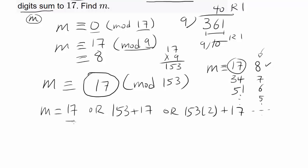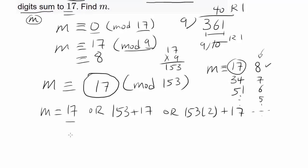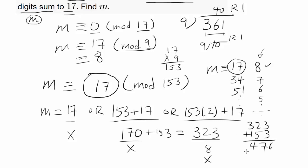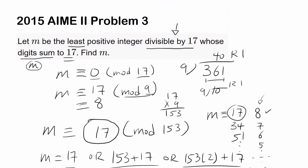So let's evaluate this. For 17, the digits do not sum to 17, so 17 is out. 153 plus 17 is 170, and digits sum to 8, so that's out. And you add another 153 to this, and that's going to get us 323, digits sum to 8, so that's out. Add another 153, gets us 476, and the digits sum to 17, so we are done. Our answer is 476.